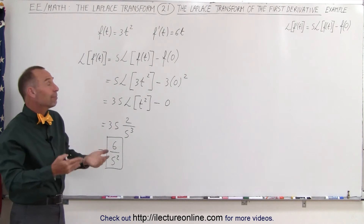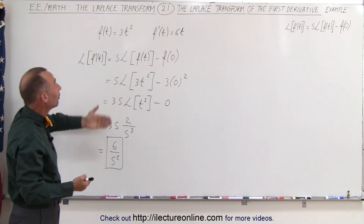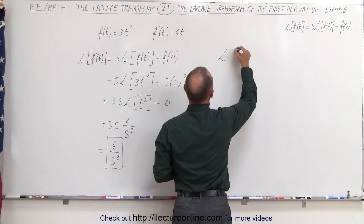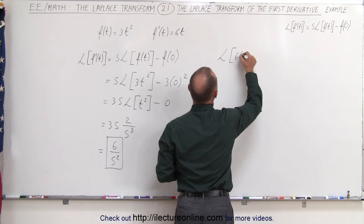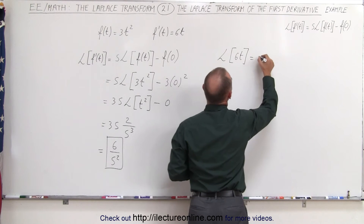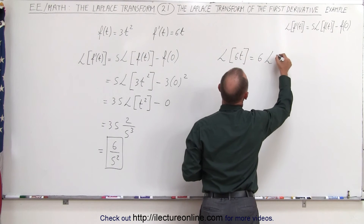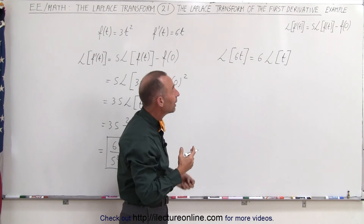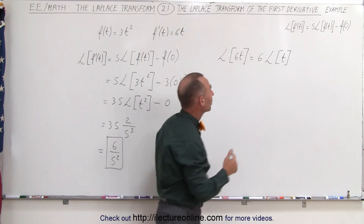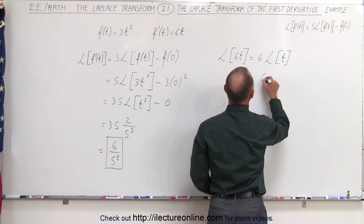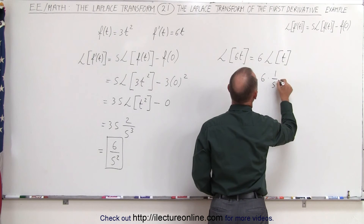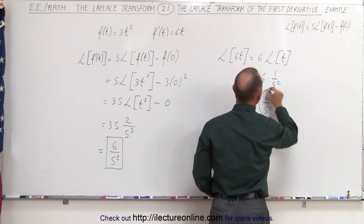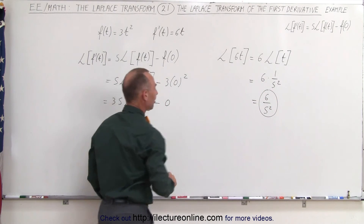Now let's check the answer by simply taking the Laplace transform of 6t. So if we take the Laplace transform of 6t, this can be written as 6 times the Laplace transform of t, and of course the Laplace transform of t is simply 1 over s squared. So this becomes 6 times 1 over s squared, or 6 divided by s squared. Notice that I get the exact same answer as before.